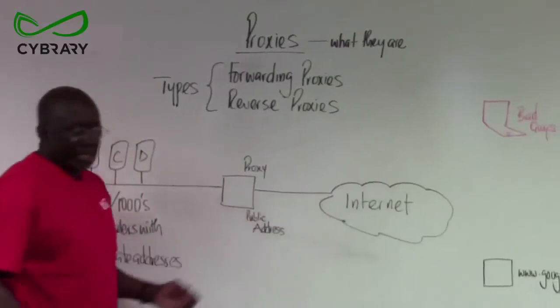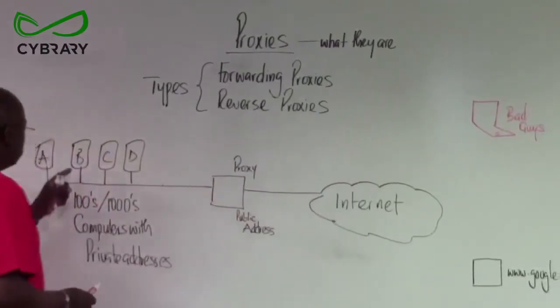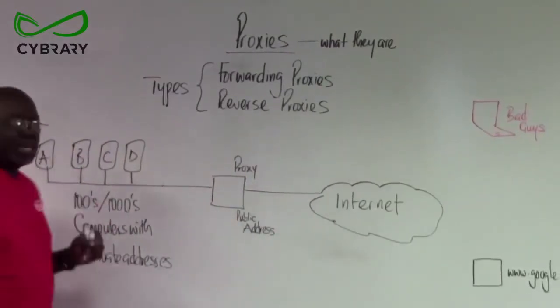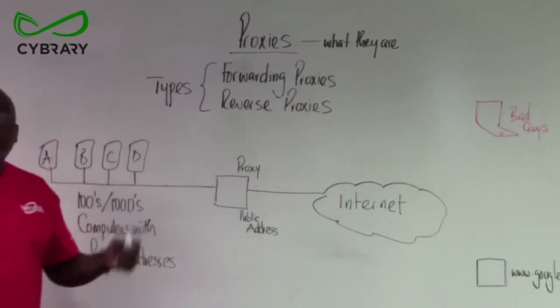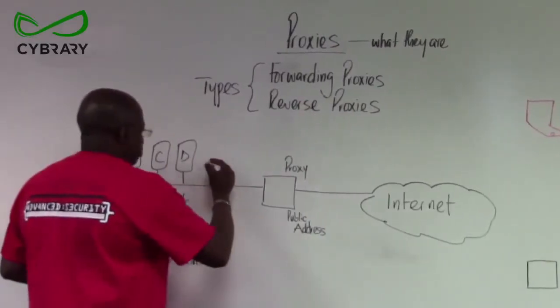So, all their requests are sent to the proxy. Let's assume computer B is going to send a request to Google. What is the weather tomorrow? So, the packet is put on the network.